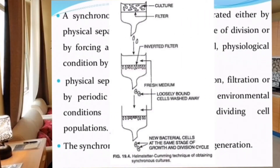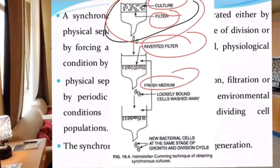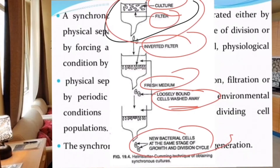Diagrammatically, to define a synchronous culture, we use a batch culture system. A filter is applied so that bacterial cells of the same size are obtained. Fresh medium is supplied, and loosely bound cells are washed off. This filtering technique allows us to grow and identify cells at a single-cell stage.